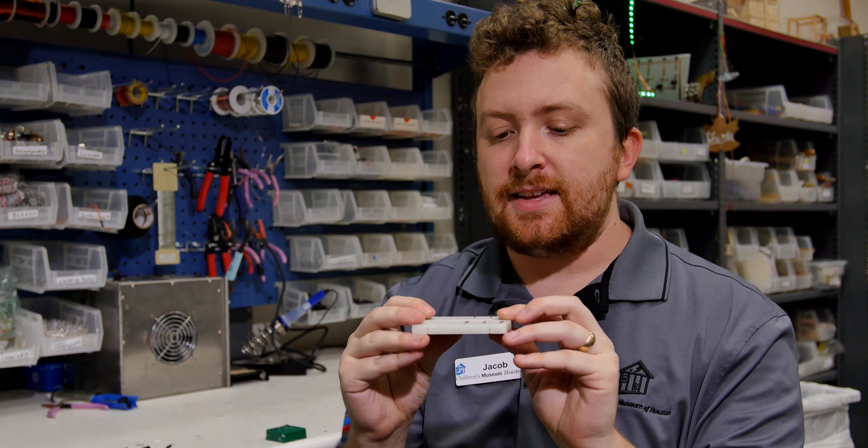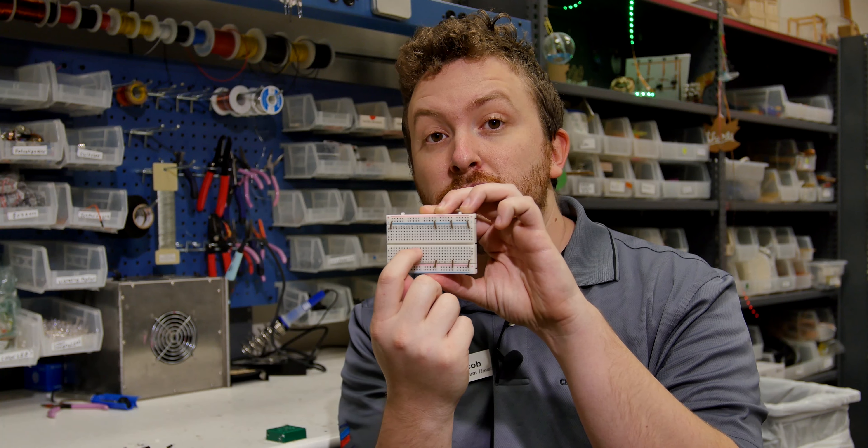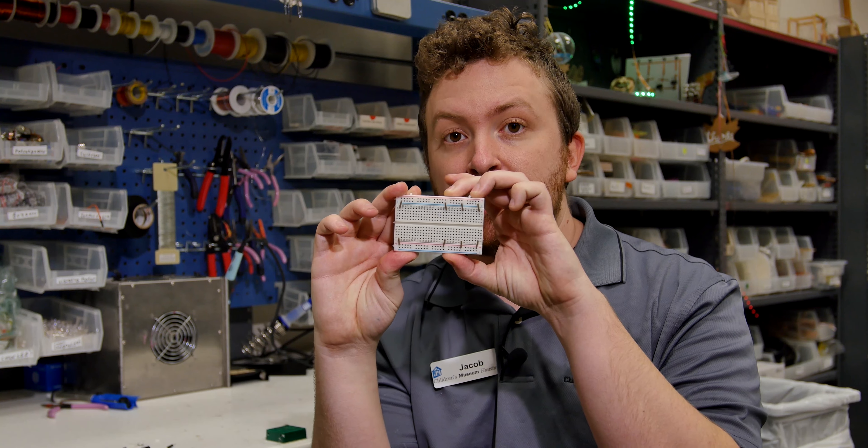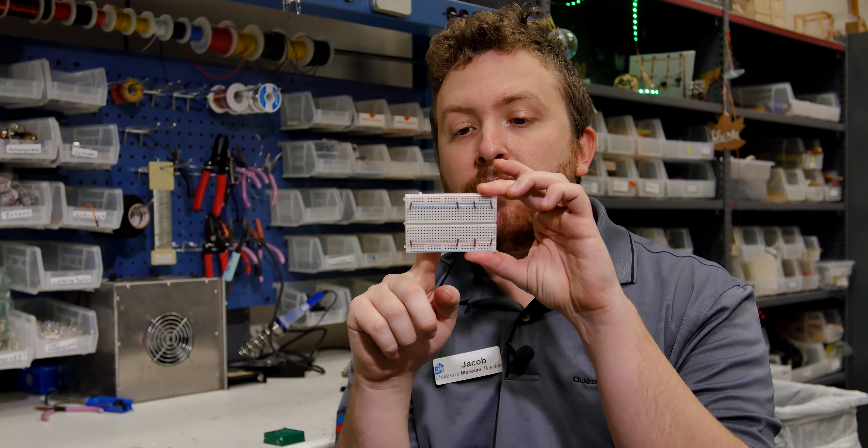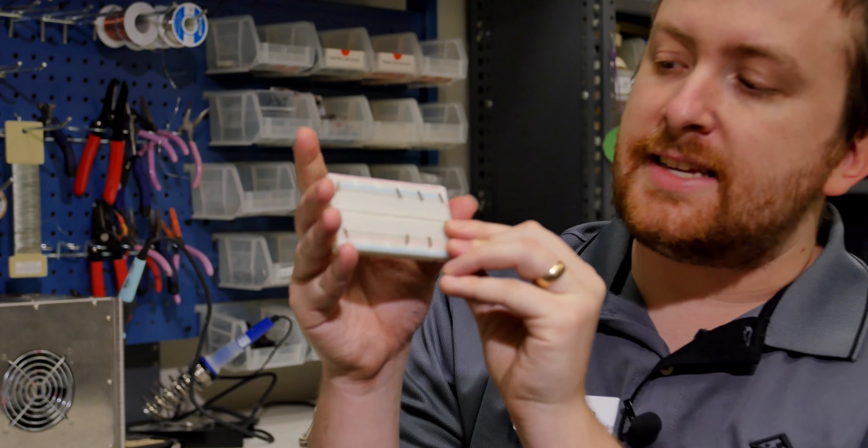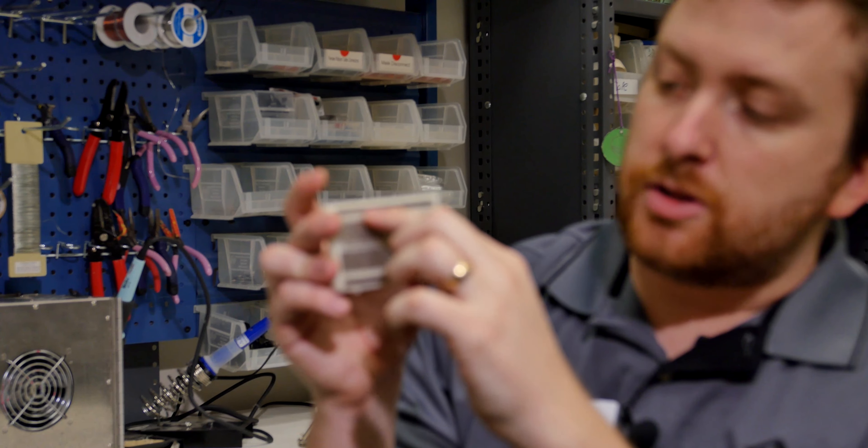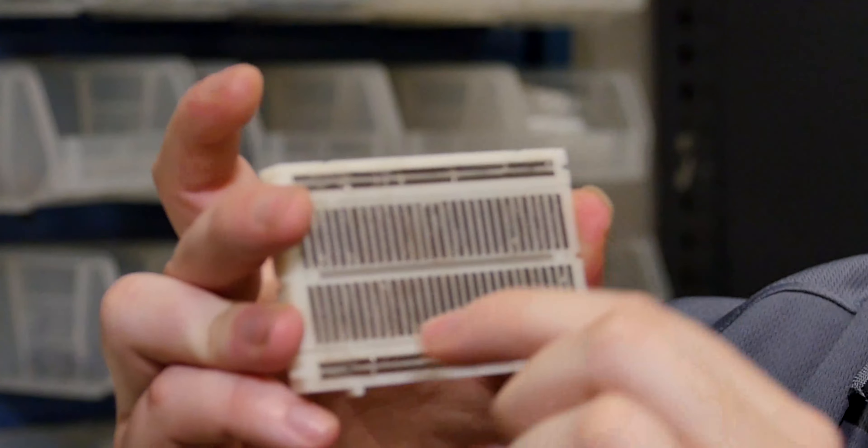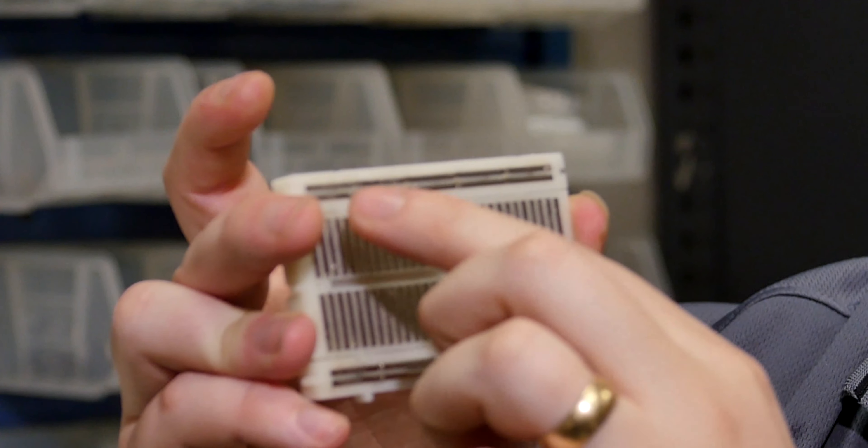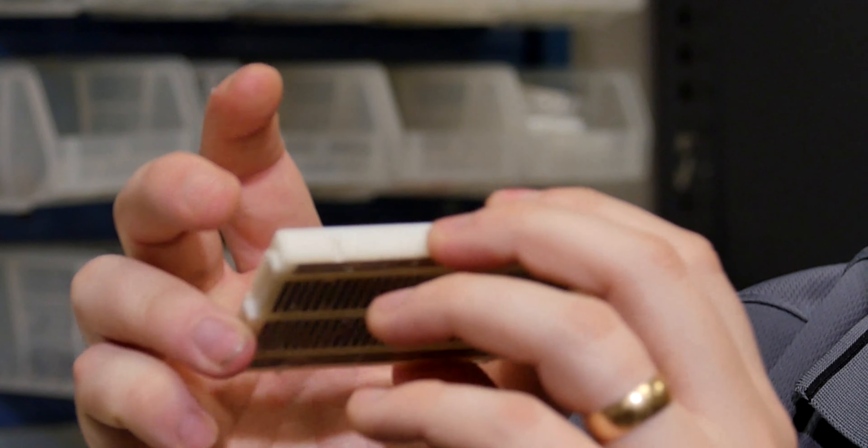Alright, so basically the way that this works is it has a bunch of holes in it. So when you first look at one of these it's very confusing. But if we take the back off, which I've already done, you can see that all of these holes are connected in a very specific way. So you see there's a long line here, a long line here, a long line here, and a long line here. So on the bottom there's two long lines. At the top there's two long lines. And then along the middle there's just a bunch of horizontal lines.